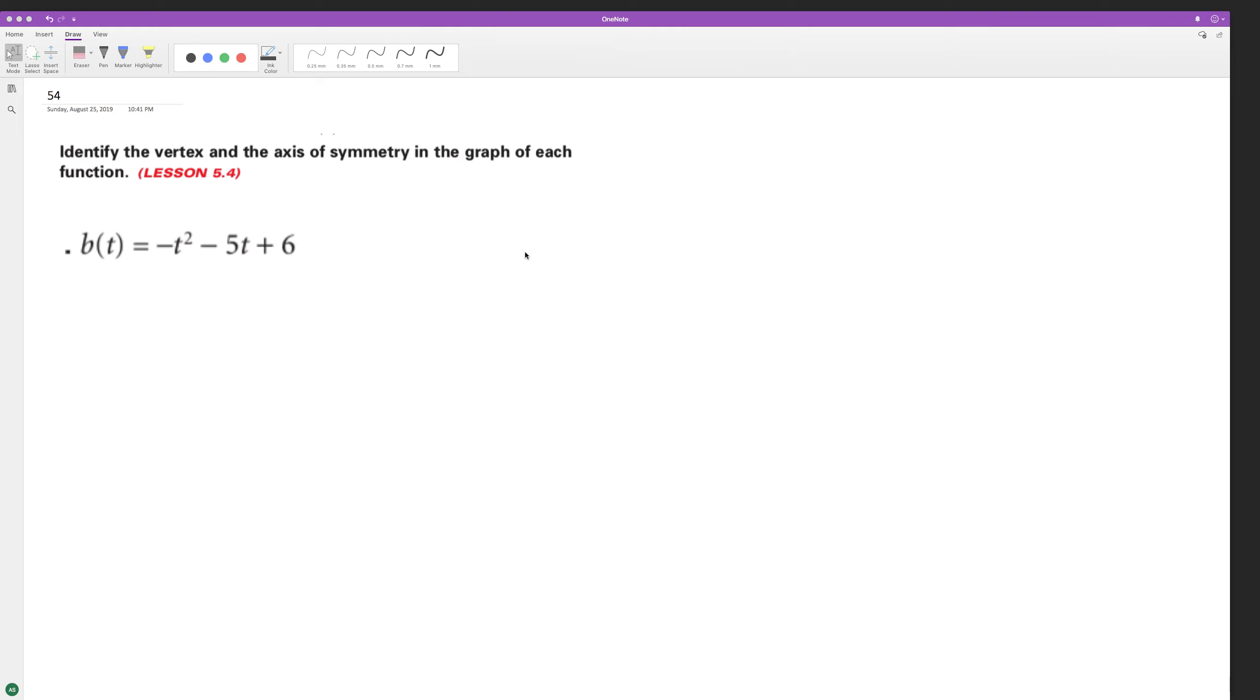The problem: we want to find the axis of symmetry and the vertex. The axis of symmetry can be found using the equation negative b over 2a. b is the constant in front of the middle term, and a is the constant in front of the squared term of the quadratic equation.